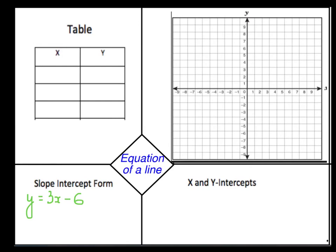How can we from this form find the table of values, find some points on that line, and draw the line and find the x and y-intercepts? We are going to go in that direction.